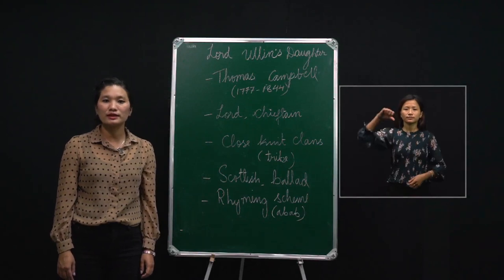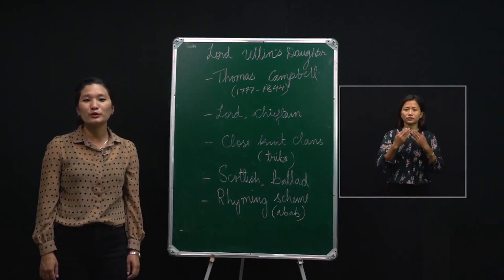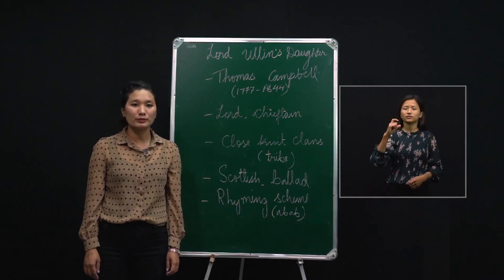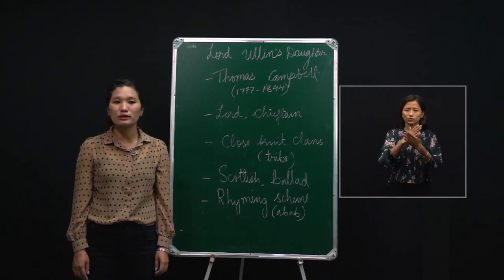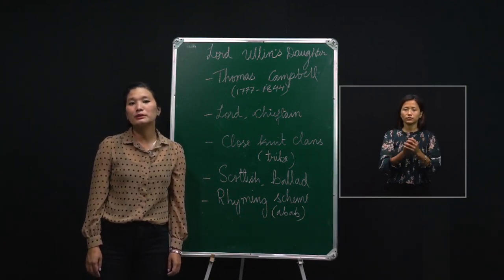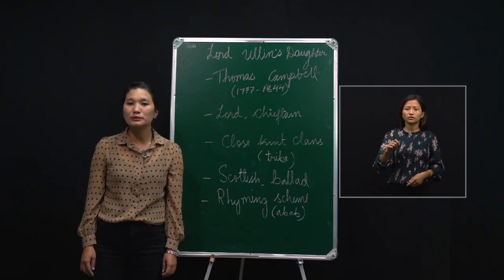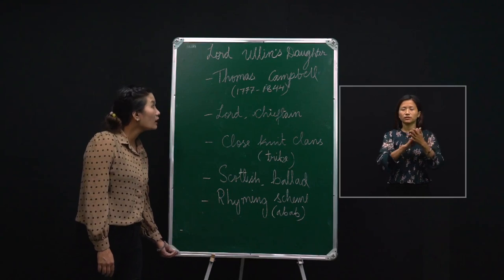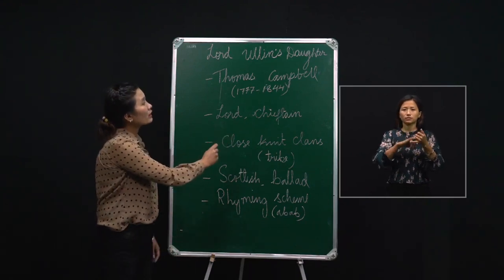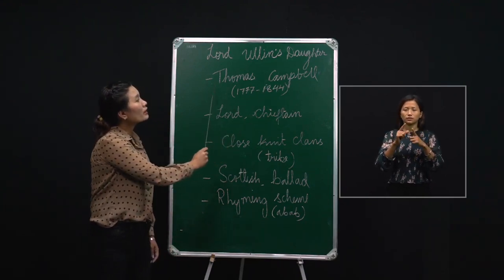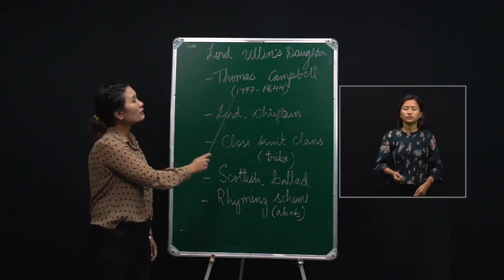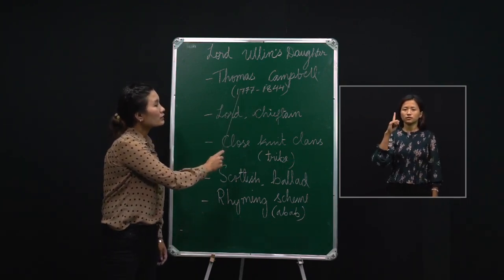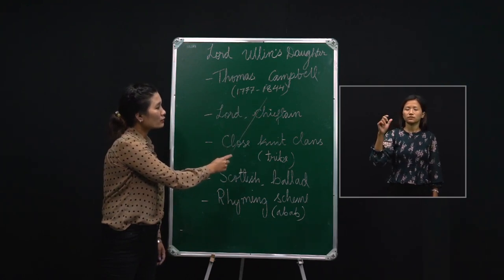Hello, dear class 9 students. Welcome back to our English class. We have been doing a lot of topics and the literature portions are almost covered. Today we will be doing 'Lord Aline's Daughter,' a poetry written by Thomas Gamble. He was a poet who lived between 1777 to 1844.